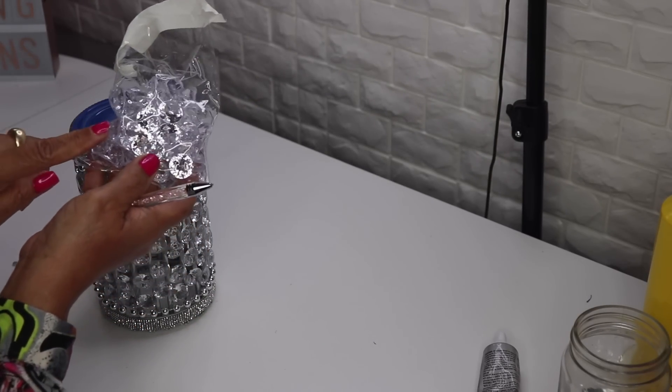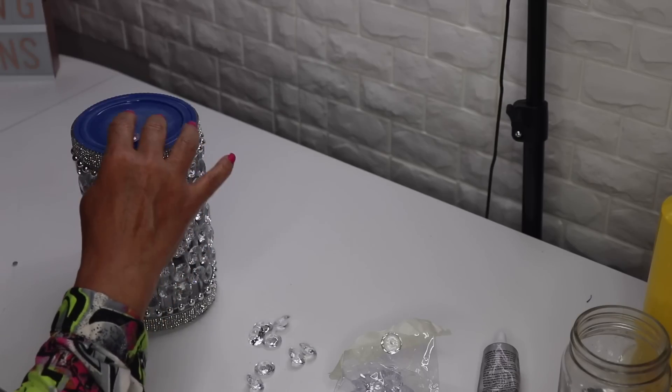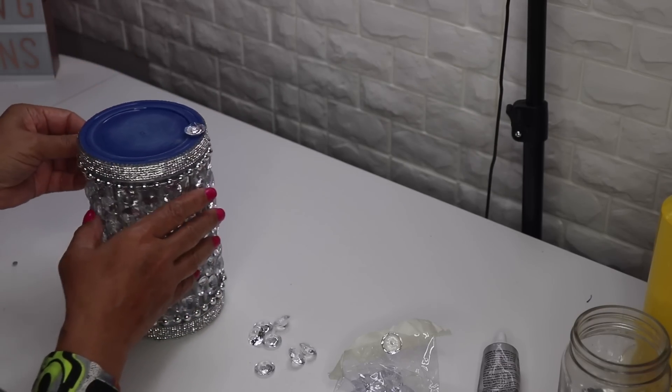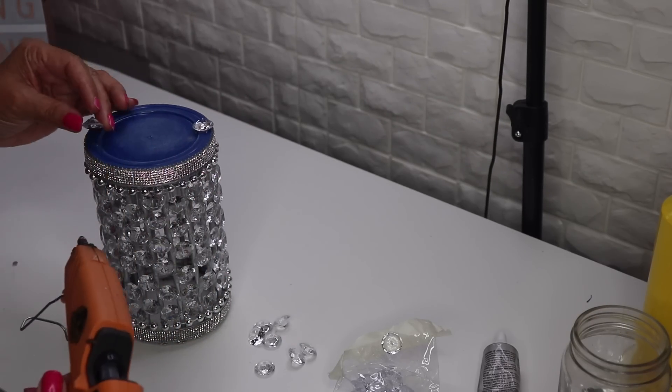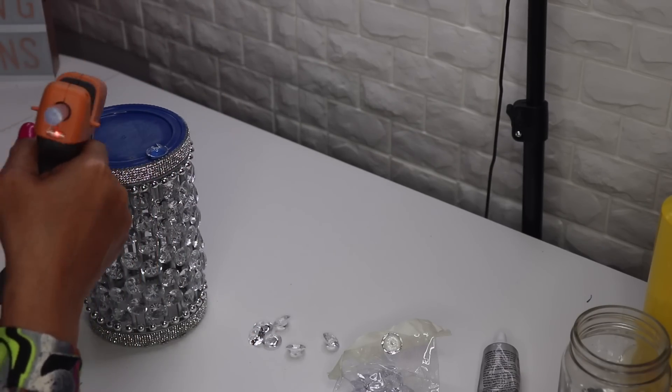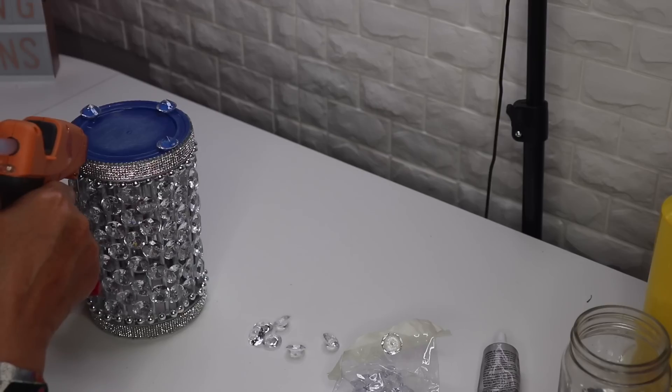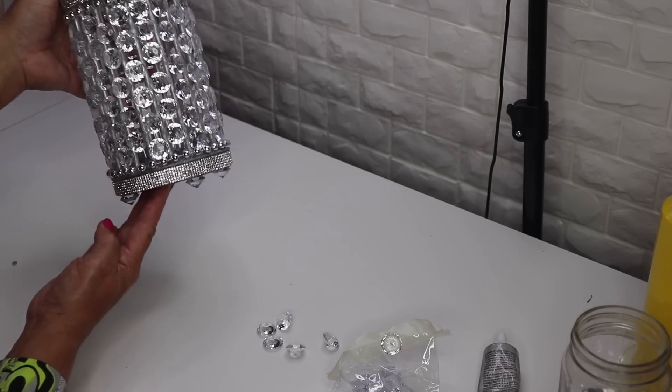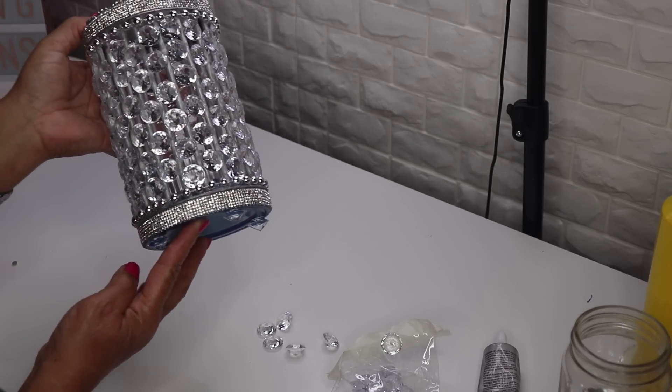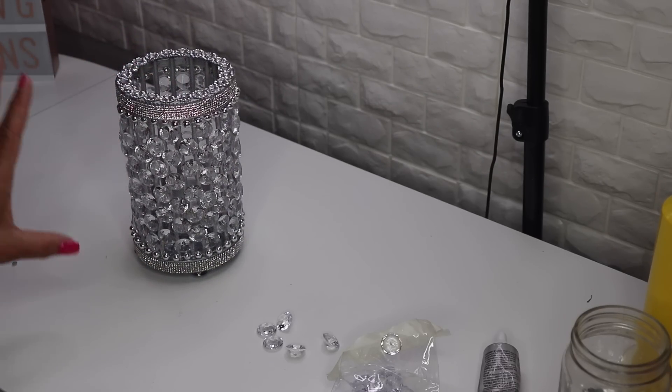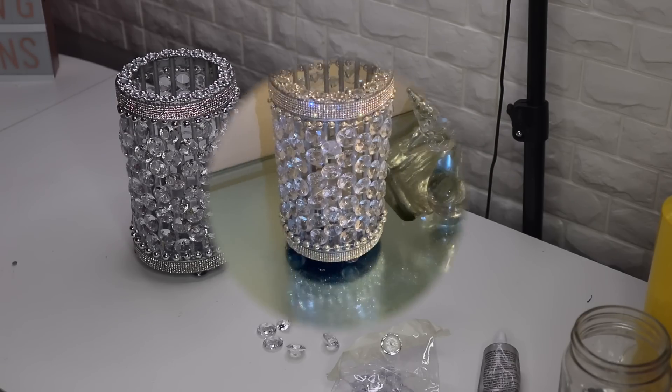Now I'll take four of the Dollar Tree gems and glue them right on the bottom. Now we have our feet. That's what it looks like from the side with the feet. I'll go ahead and light this up with some string lights and an LED light and I'll come back and let you guys see what it looks like.